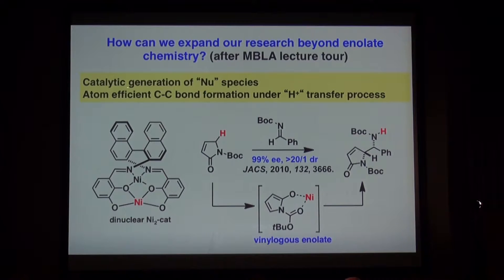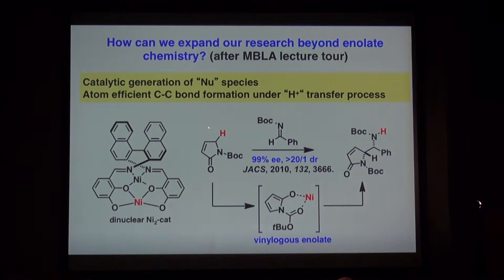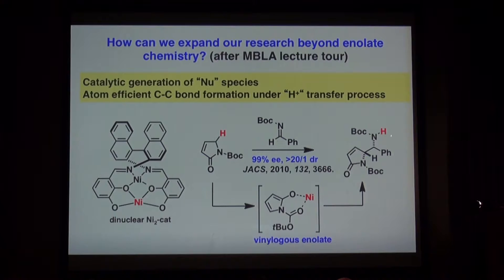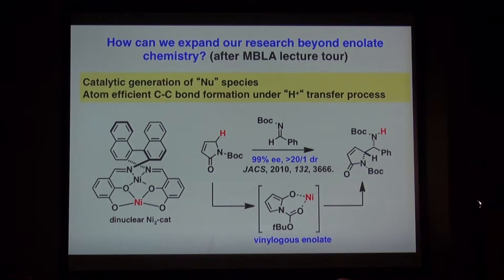First, catalytic generation of nucleophilic active species is important in our designs. For example, the catalyst protonates to generate a vinylogous enolate. Then, after the C-C bond forming reaction, the reaction ends up with proto-demetallation. Overall, the C-C bond forming reaction proceeds under a simple proton transfer process — from here to there — to realize high atom efficiency.